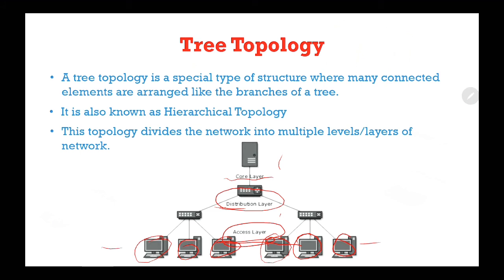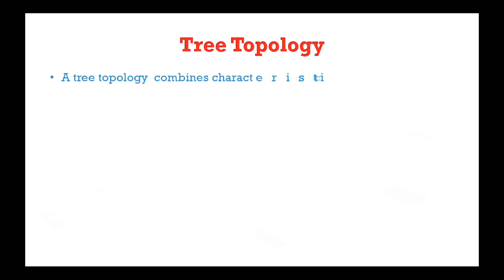The higher layer is known as the core layer and is the center point of the network — that is the root of the tree from which all nodes fork. A tree topology combines characteristics of linear bus and star topology, which is why in computer networks we also call it star-bus topology. It incorporates elements of both.